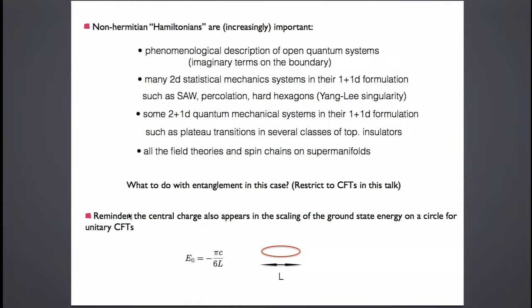The context in which I want to consider this relation is the context of non-Hermitian Hamiltonians, which are important in a variety of contexts and probably getting more important over the years. There is a description of open quantum systems where you try to recover the loss of coherence by putting dissipative terms in the Hamiltonians. There are also many statistical mechanics systems — 2D statistical mechanics or 1D quantum spin chains — like the study of self-avoiding walks, polymers, hard hexagons, and so on — which do not correspond to a Hermitian Hamiltonian and are described by a non-unitary field theory.